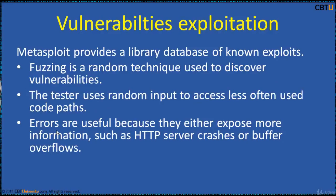Metasploit provides a Ruby library for common tasks and maintains a database of well-known exploits. Under budget and time constraints, fuzzing — a random input technique — can be used to discover vulnerabilities. The tester uses random input to access less often used code paths.